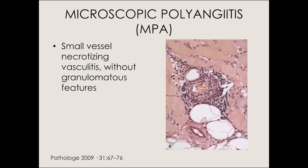Microscopic polyangiitis has a very interesting story. It was grouped together with polyarteritis nodosa until the 1990s, and was previously called microscopic PAN. When ANCA testing was developed in the late 1980s and early 1990s, this subset was recognized to have a strong association with ANCA and share features with Wegener's, so it was brought into the ANCA vasculitis family. MPA is a non-granulomatous small vessel necrotizing vasculitis associated with ANCA.